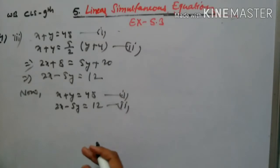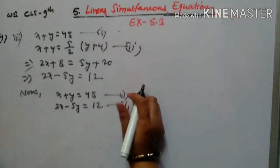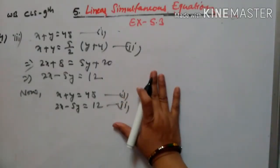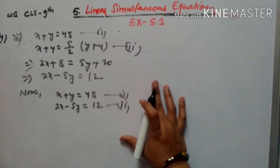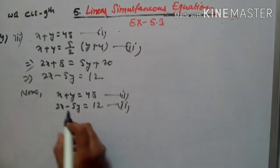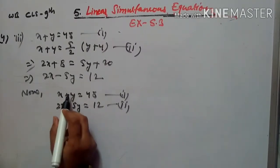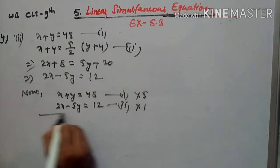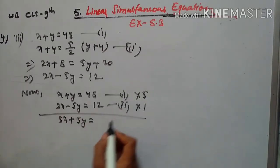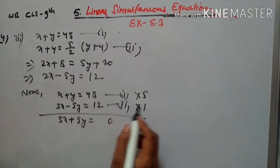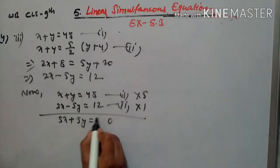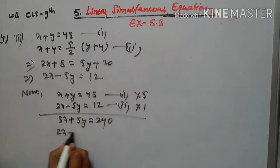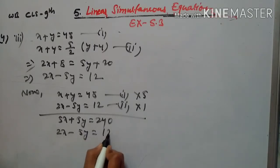We have x + y = 48 (equation 1) and 2x - 5y = 12 (equation 2). Now we multiply equation 1 by 5 to get 5x + 5y = 240, so that the y terms can be eliminated when added with equation 2.